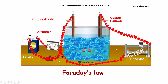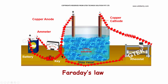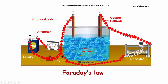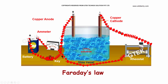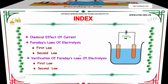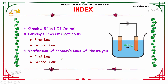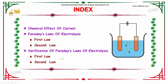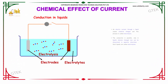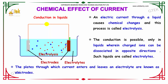Now we are going to see Faraday's law in this chapter. The index covers: first, the chemical effect of current; followed by Faraday's law of electrolysis — the first law and second law; and the verification of Faraday's law of electrolysis, both the first and second law.